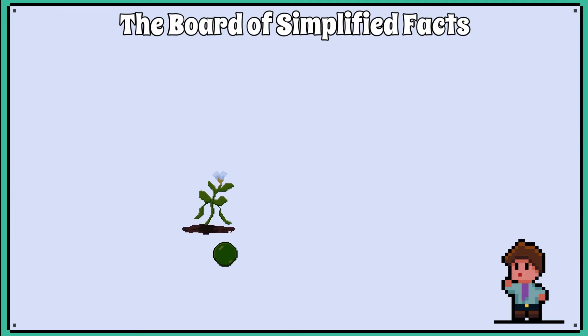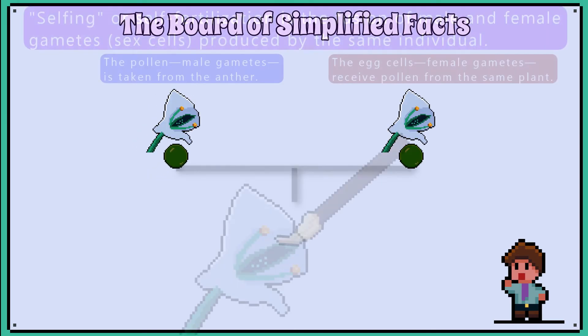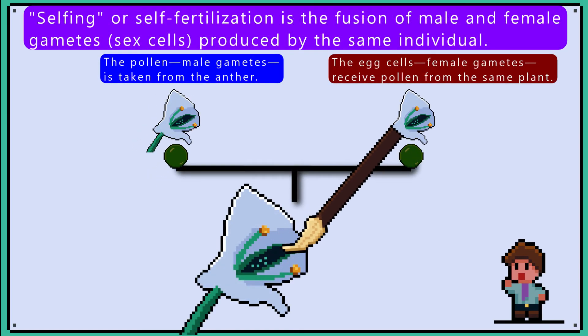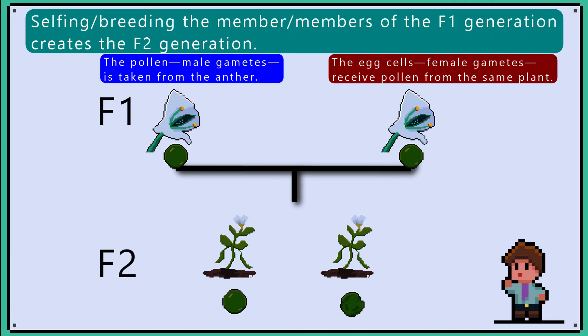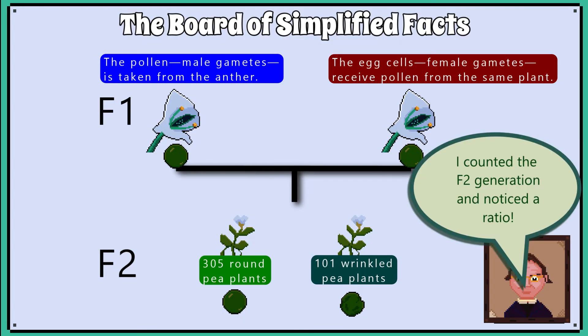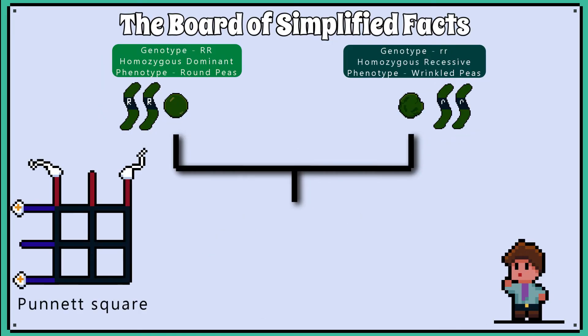Now, if we take one of these offspring and have it breed with itself in a process called selfing, you basically take the male gamete found in the pollen and fertilise the female gametes of the same plant. You notice that some of the next generation, which we now call the F2 generation, now have both round and wrinkled peas. Mendel started counting how many round peas he had versus wrinkled pea plants in his F2 generation, and noticed he had three times more round pea plants than wrinkled pea-producing plants. This 3-to-1 ratio is what happens when two heterozygous individuals breed.